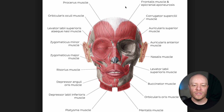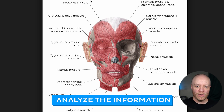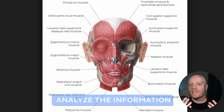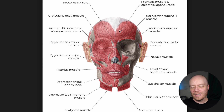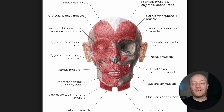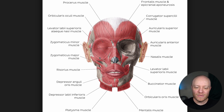The second step is you want to analyze the information. You want to look for themes, patterns, and similarities that they may have. As I was looking over this, I was thinking, what do they all do? They're there to express emotion. We as a human species are a very emotive species, and that's exactly what these muscles do. So I feel like emotion needs to be part of this mnemonic.